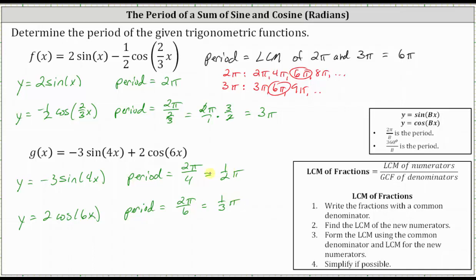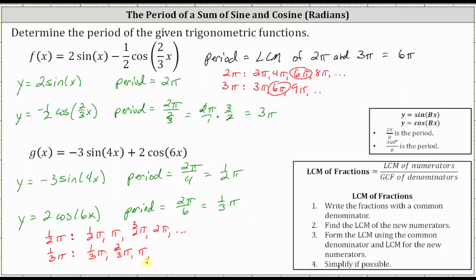So the period of g of x is equal to the least common multiple of one-half pi and one-third pi. Listing out multiples: multiples of one-half pi are one-half pi, pi, three-halves pi, two pi, and so on. Multiples of one-third pi are one-third pi, two-thirds pi, pi, four-thirds pi, and so on. We can see the least common multiple is pi radians, which is the period of g of x.